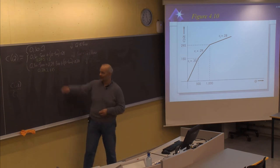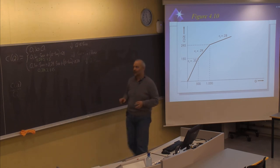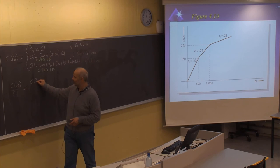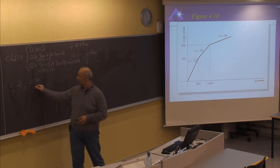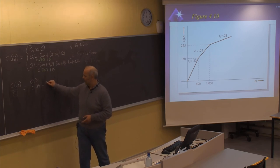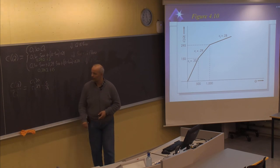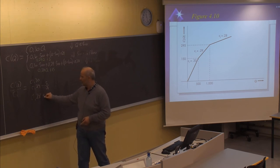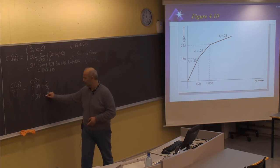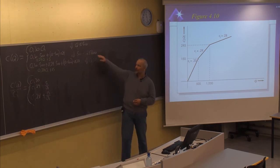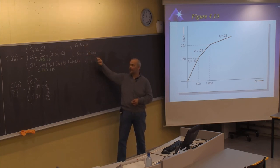These are the three expressions. To find the price per unit, we divide by Q. So the first is simply 0.30. The second is 0.29Q divided by Q plus 5 divided by Q, giving 0.29 plus 5/Q. The third option is 0.28Q divided by Q plus 15 divided by Q. This is the expression for the unit price in these three options when the order size is less than 500, between 500 and 1000, or more than 1000.